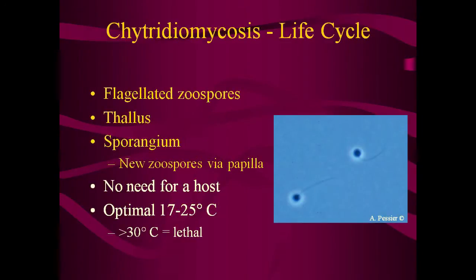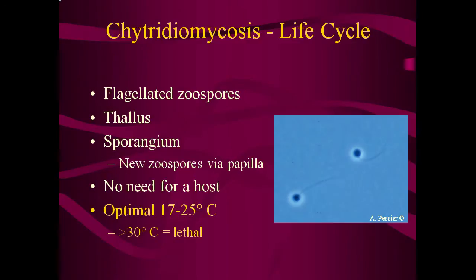The life cycle of the fungus is fairly simple, as sexual reproduction has not been seen. The flagellated zoospores grow into a thallus, which produces a single sporangium. The sporangium creates new zoospores, which exit the sporangium through a papilla, and the cycle is repeated. This cycle can occur in the environment without the presence of a host. The fungus can grow at a range of temperatures, but optimal temperatures are 17 to 25 degrees Celsius. Exposure to higher than 30 degrees is lethal.